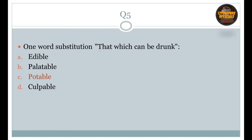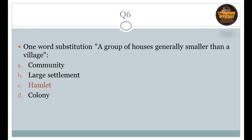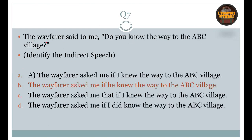Question number 5: One word substitution — that which can be drunk. The one word substitute is 'potable'. Question number 6: One word substitution — a group of houses generally smaller than a village. Right option is C: hamlet. Question number 7: Identify the indirect speech. The wayfarer said to me, 'Do you know the way to the Abyssee village?' Right option is C: The wayfarer asked me if I knew the way to the Abyssee village.